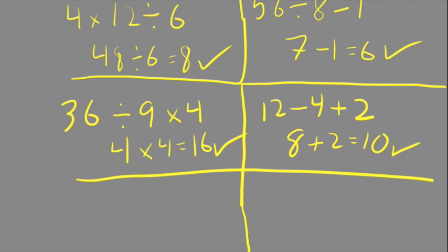Let's do one more here. 3 × 8 - 6. We do multiplication and division first. So 3 × 8 is 24, - 6 equals 18.